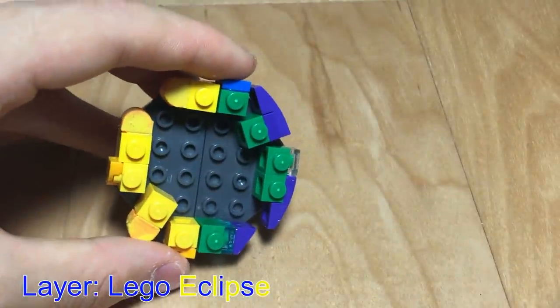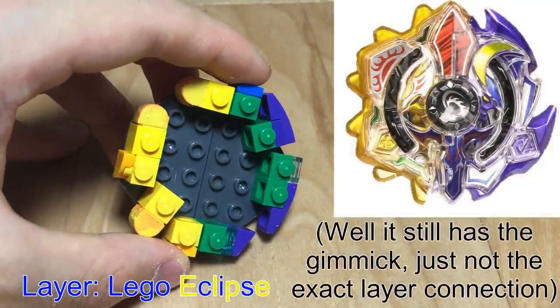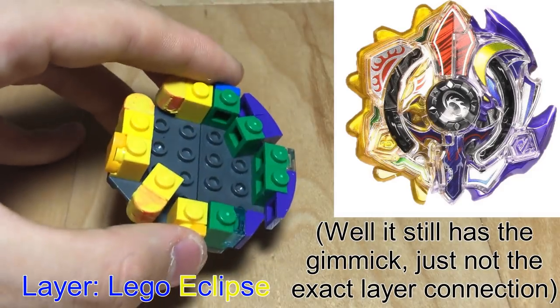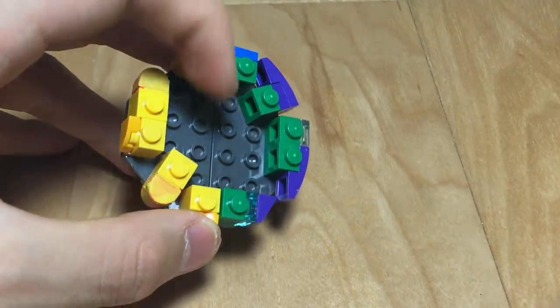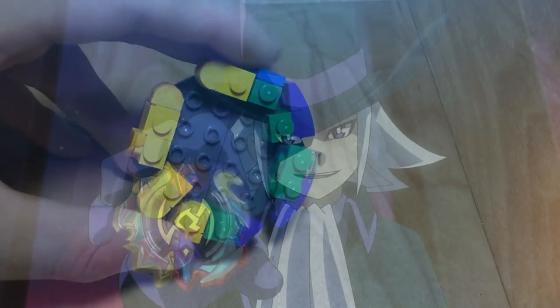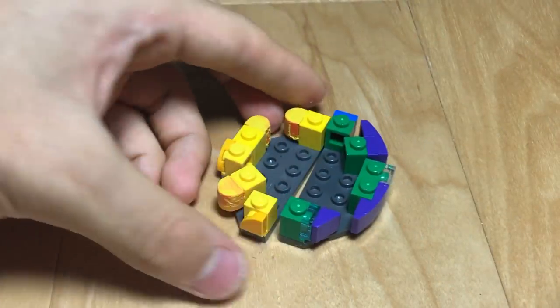While I could have went for the standard gimmick of Eclipse, having two hubs that you would connect together to make a mix and match, which is kind of perfect for Lego, I still decided to add weight in it to spice things up a bit, and also to add some more functionality and design to the bay. As you can see, we still have two hubs of the bay.